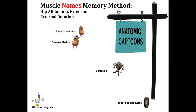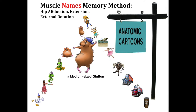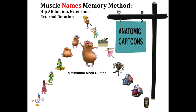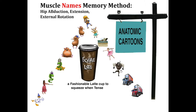Let's review the five familiar muscle cartoons: a magnificent magician duck — Adductor Magnus; a medium-sized glutton — Gluteus Medius; a minimum-sized glutton — Gluteus Minimus; a Taurus bull who thinks he's the czar of bulls — Sartorius; and a fashionable latte cup to squeeze when tense — Tensor Fasciae Latae.